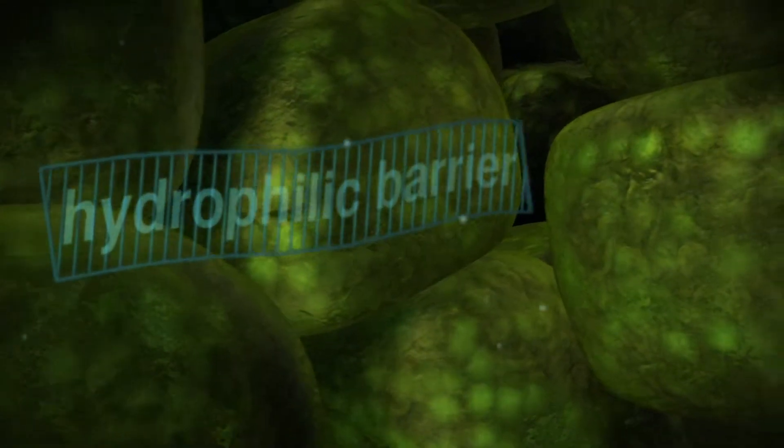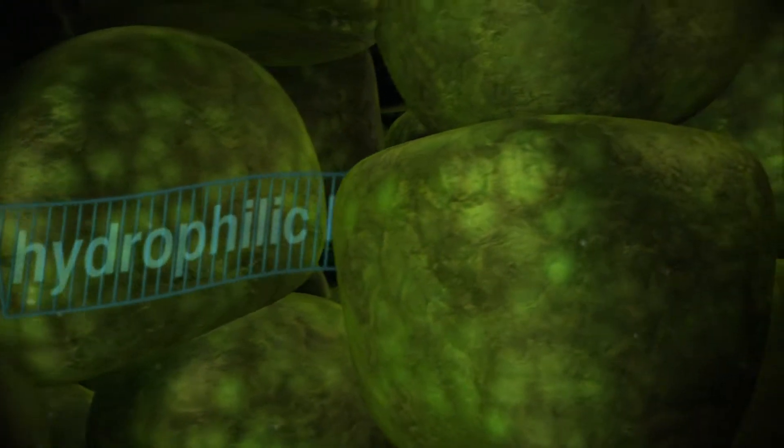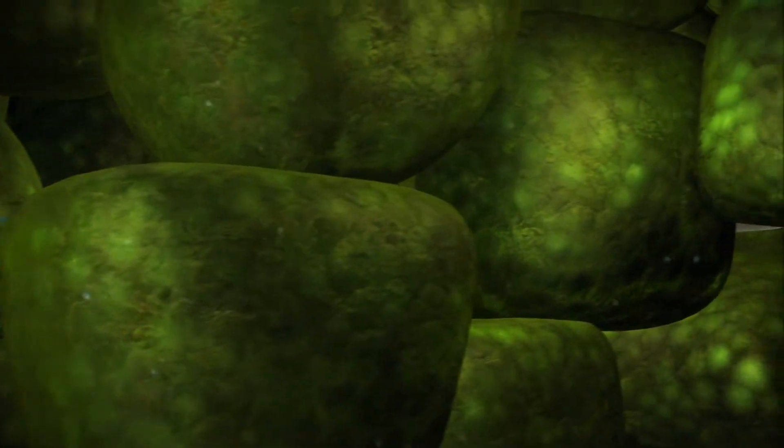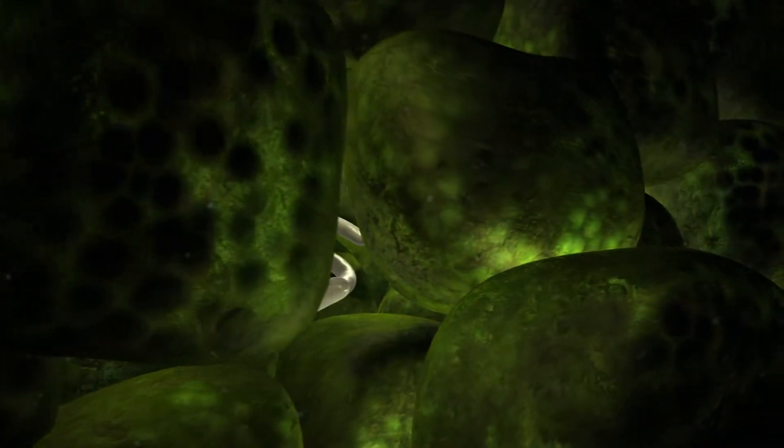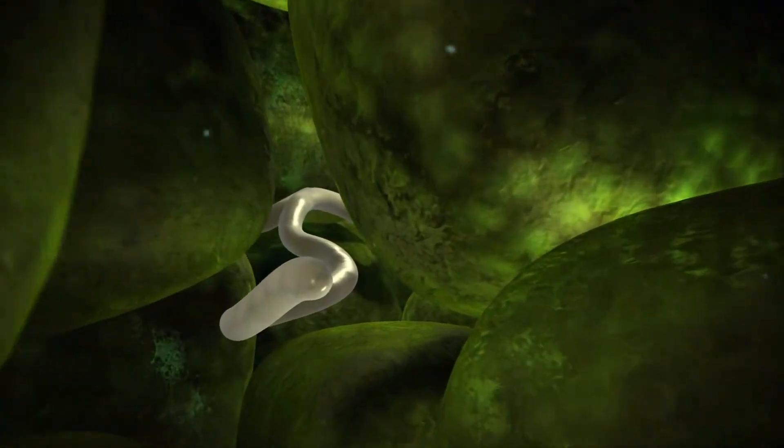Between the cells of the leaf tissue, on the other hand, an aqueous environment prevails. Here, aqueous solubility of a fungicide is decisive for rapid transport to the fungal cells that have colonized the plant.